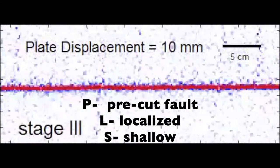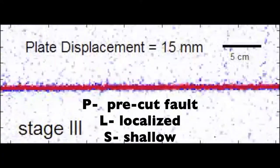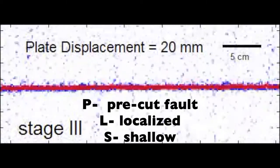So the PLS experiment is our simplest experiment. The pre-cut fault, the localized basal shear, and shallow depth of faulting. So this experiment is essentially a control for the rest of the experiments because it gives us an idea of how faulting in the clay will behave over time. So this is our most basic experiment so that we can compare everything back to this background level.